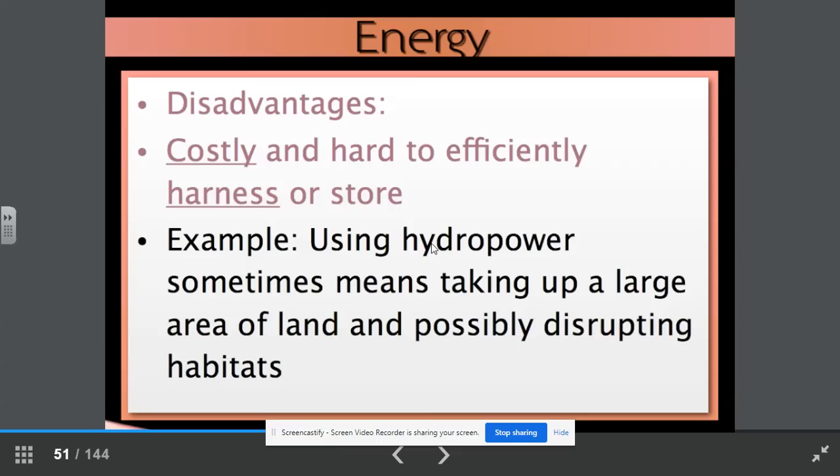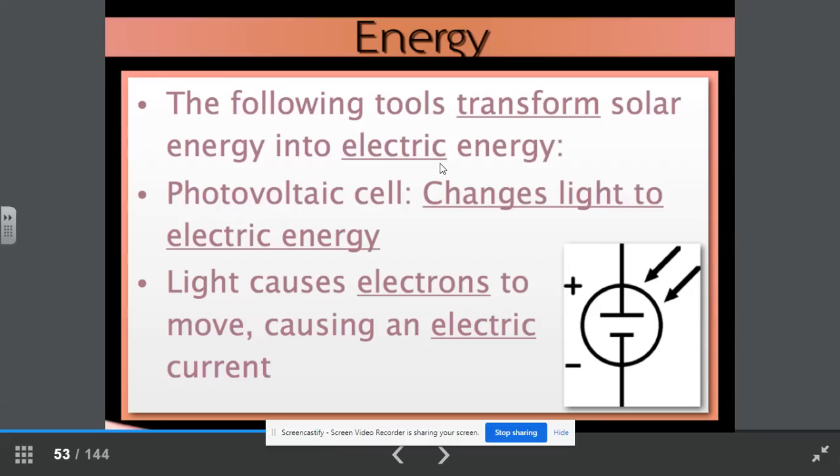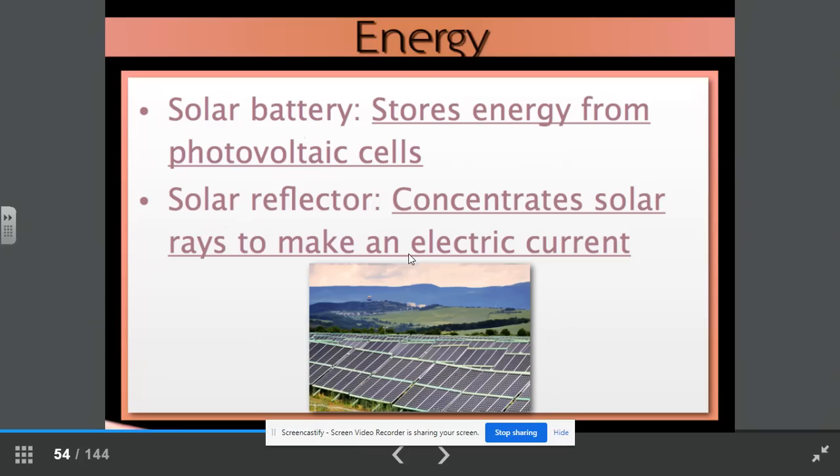Solar energy is harnessed from the sun. The sun has more energy than the earth even needs, but it is difficult to capture and store it. The following tools transform solar energy into electric energy. The photovoltaic cell. This changes light to electric energy. The light causes electrons to move, causing an electric current. The solar battery stores energy from the photovoltaic cells. The solar reflector concentrates solar rays to make an electric current. We imitated this when we made our solar ovens using a pizza box, tin foil, black paper, and saran wrap.